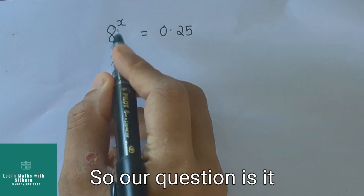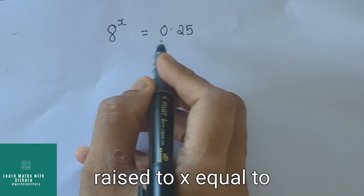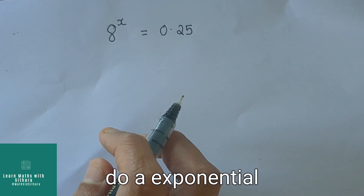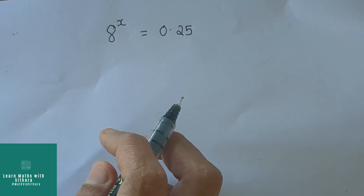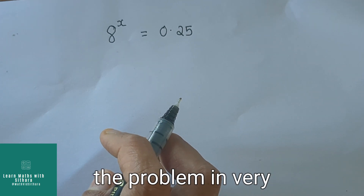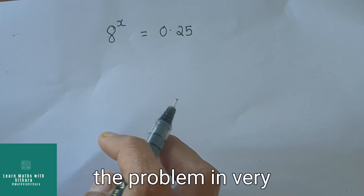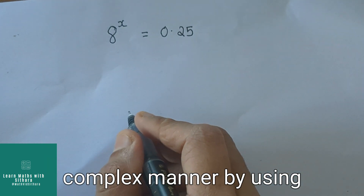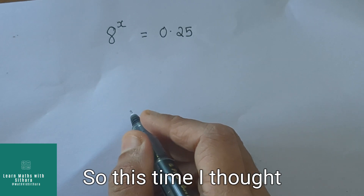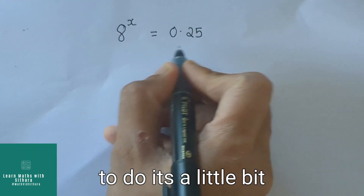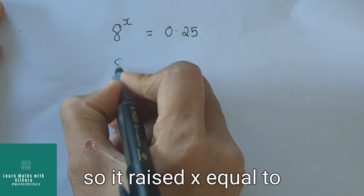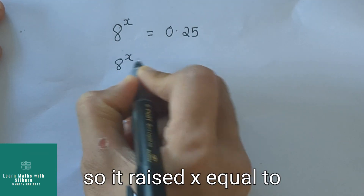Our question is 8 raised to x equal to 0.25. Last time when I did an exponential problem, many of my viewers told me that I am doing the problem in a very complex manner by using logarithm. So this time I thought to do it a little bit simpler. So let's start.